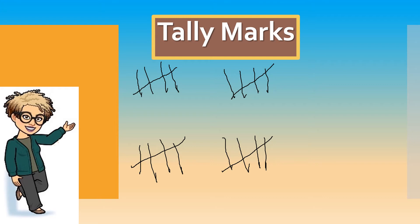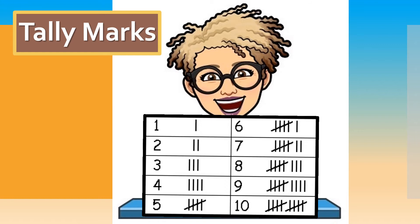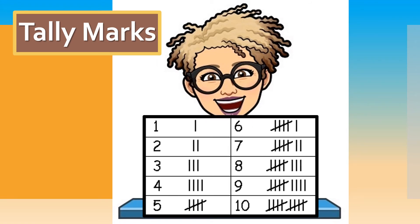Let's look a bit more closely at how each tally mark looks with its respective number. Here are the tally marks along with their numbers: one, two, three, four, five, six, seven, eight, nine, ten. This is how the tally marks look next to their respective numbers. Open your memory bank and lock this in because you're going to need to remember this for quick referencing on tally graphs.